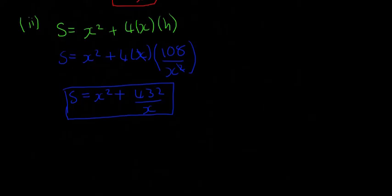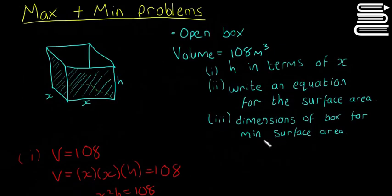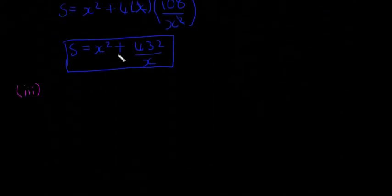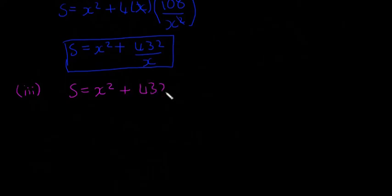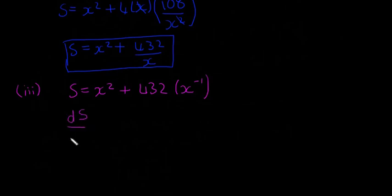For part three, we need to find the dimensions that give the minimum surface area. To find turning points — minimum or maximum — we always use calculus and differentiate. Before differentiating, I'll rewrite S as: S = x² + 432x⁻¹. Writing it this way avoids using the quotient rule, which can be quite messy, and is much quicker.